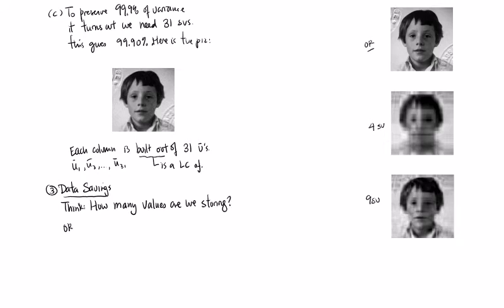So in the original, the one on the upper left, in that one, right? What we're doing is we're storing 200 by 200. That's 40,000 numbers.